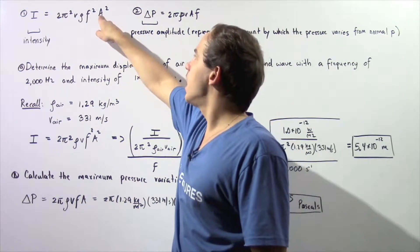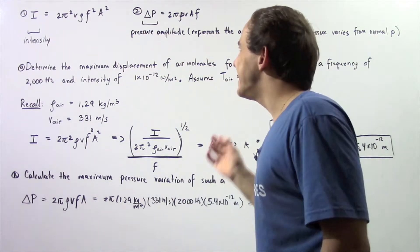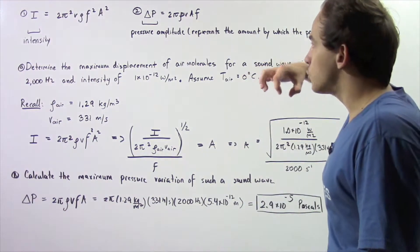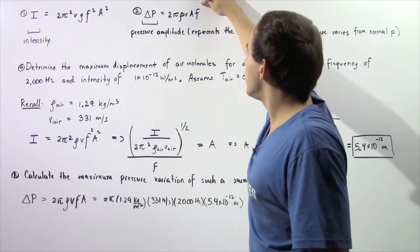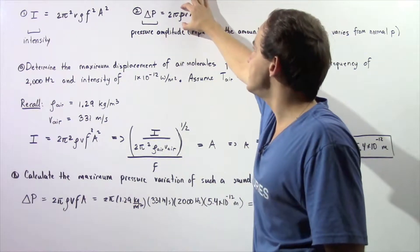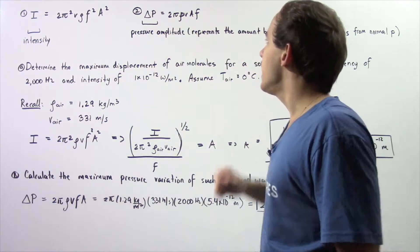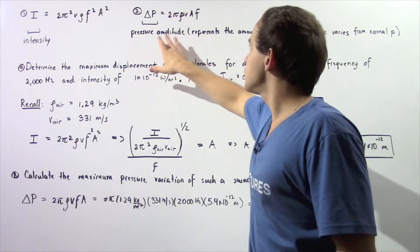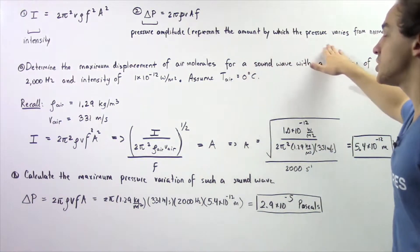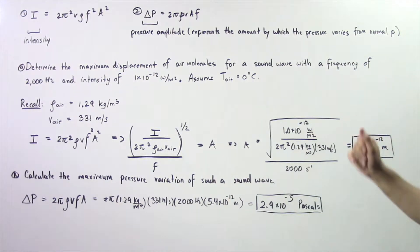Equation number two gives us the pressure amplitude, the change in pressure, using the following variables: the frequency, the amplitude, velocity, and density, as well as our constant 2 and π. This is the pressure amplitude. It represents the amount by which the pressure varies from the normal ambient pressure.